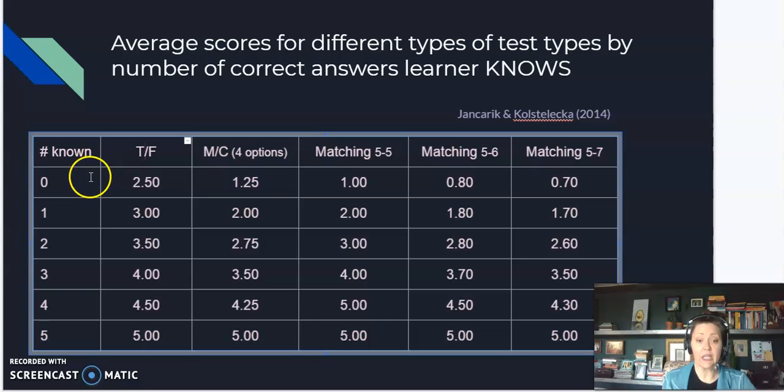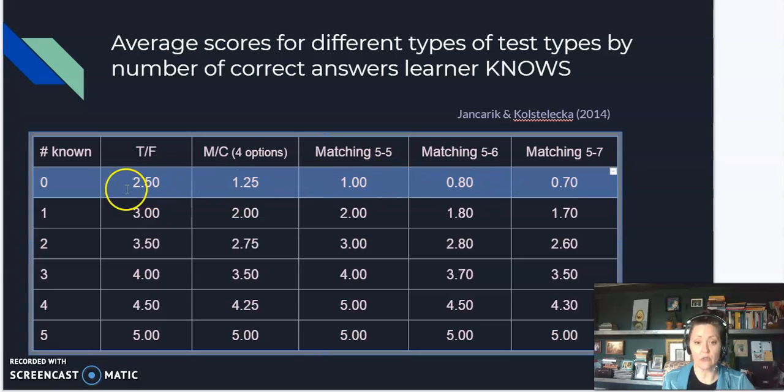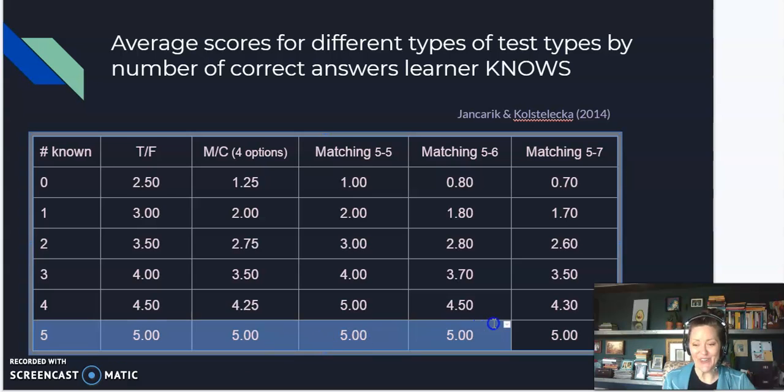So looking at it, we can see that if the student really doesn't know the answers, they can be more successful on true and false than on the matching with one or two distractors. And we can of course see that if they do know all five of the right answers, they're going to get 100 no matter what type of test.